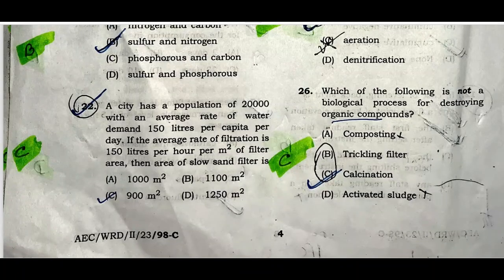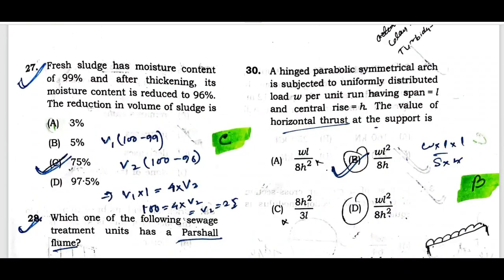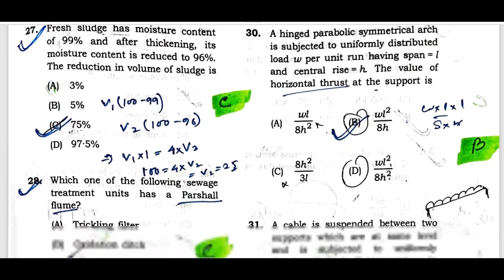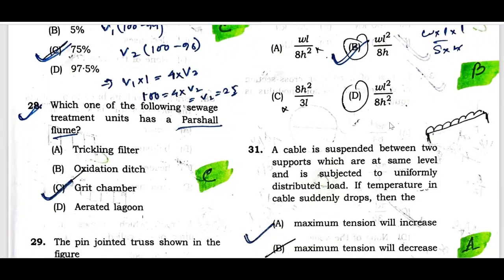Question number twenty-six: Which of the following is not a biological process for destroying organic compounds? The correct answer is calcination — calcination is not a biological process. Question number twenty-seven: Fresh sludge has a moisture content of 99%, and after thickening its moisture content is reduced to 96%. The reduction in volume of sludge is 75%.